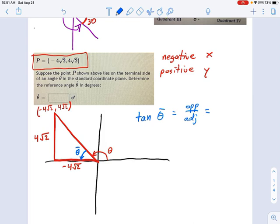The tangent of that reference angle. What is that? That's opposite over adjacent, right? SOH CAH TOA. And opposite is 4√2. And adjacent is -4√2. And you see, most of this stuff is going to cancel out. And we get -1.